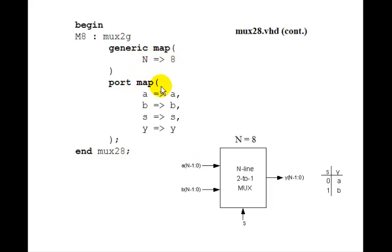And then the port map is the normal a goes to a, b to b, s to s, y to y in this case. So that's it. And you could have as many different instances of this mux 2g as you want, and some could have different values of n.